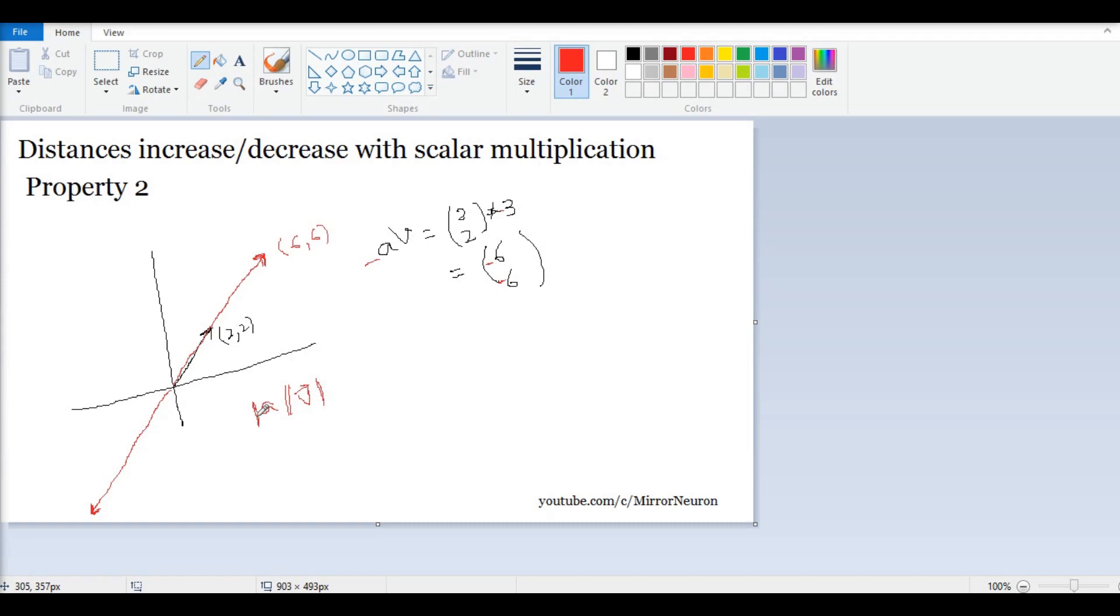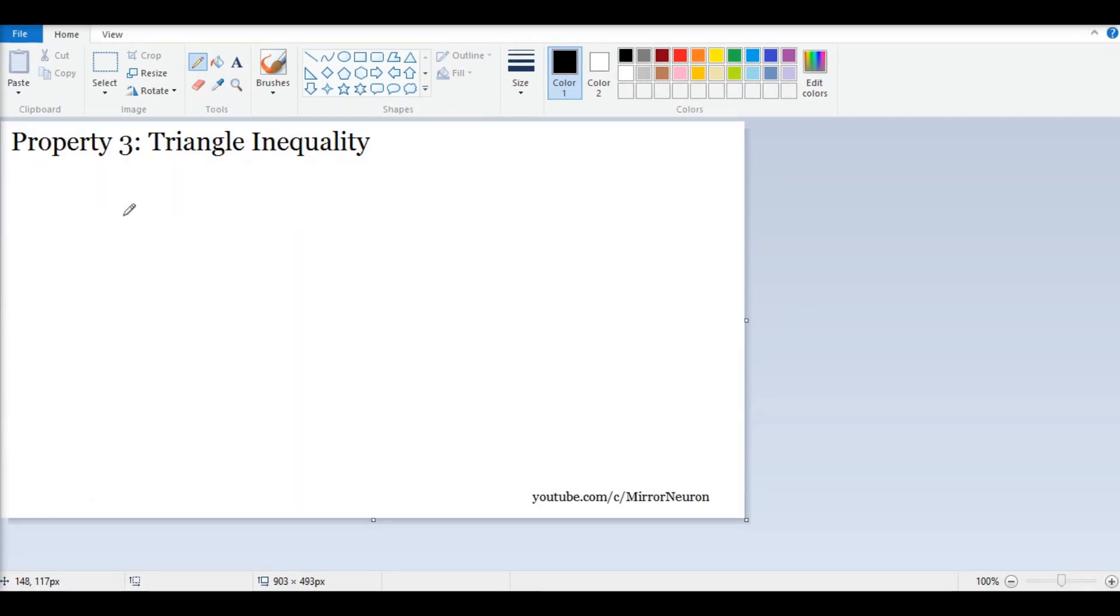So your multiplication factor of a times your vector V, right? Now for this one, we have to take the absolute value. These are single bars, okay? So basically we are taking the absolute of a times the vector distance of V. Okay, that is the second property.